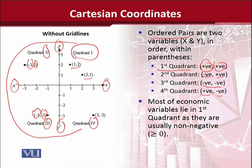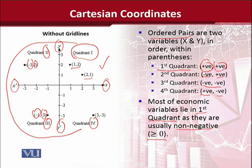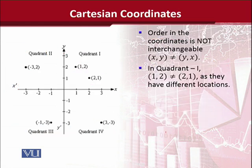Mathematically, we can use all four quadrants — there is no restriction. But when it comes to economics, economic variables are usually positive. Once we are dealing with positive variables, they occur in quadrant 1. This is why we use the first quadrant when talking about economic variables — they are non-negative values. There is no negative output, there is no negative demand. This is why we call them non-negative values.